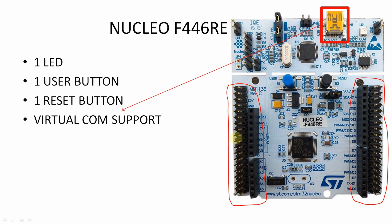That's all about the hardware overview. The Nucleo F446RE is the development board we will use throughout this course for learning bare metal programming from scratch. We will develop all the peripheral drivers from scratch using the silicon vendor CMSIS files provided by ST Microelectronics for this particular microcontroller.